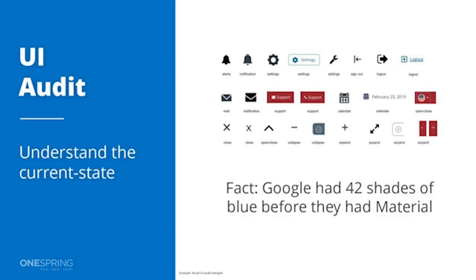Before you start creating your system, an audit gives you a big picture of your current state. A lot of organizations try to inventory everything, but that's really not necessary. The best practice is to pick one — no more than three — key or flagship applications or websites, and then create that inventory to look at all the different UI widgets and patterns being used.